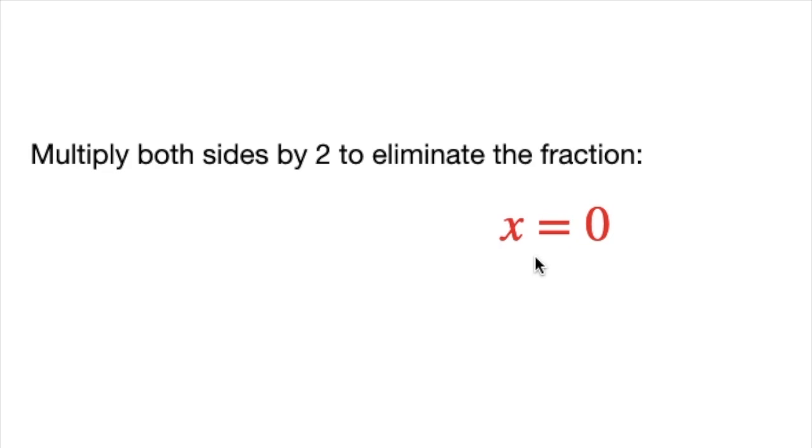So the solution to x = x/2 is x = 0. This means that x = 0 is the only value that satisfies the equation. It's a useful reminder that equations like these often have unique solutions, and simplifying step-by-step is the key.